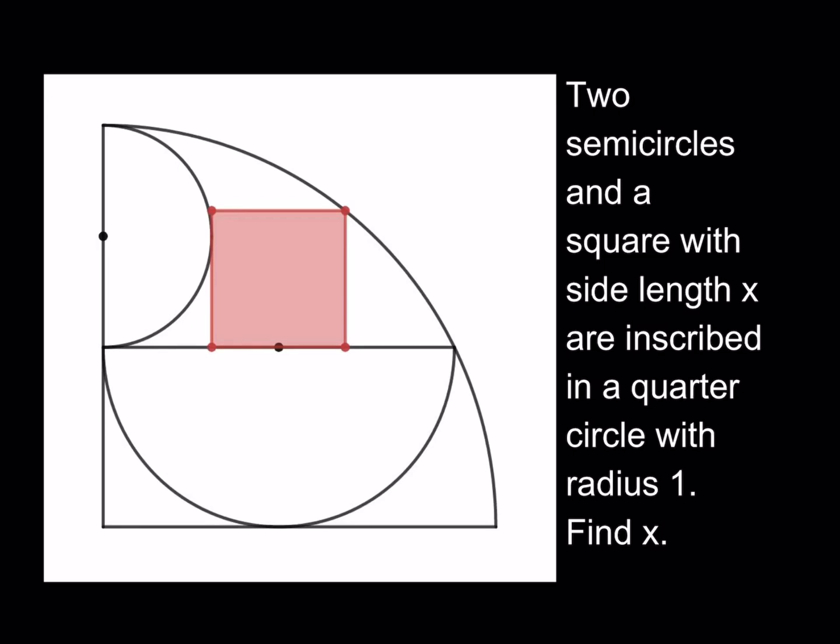Hello everyone, in this video we're going to be solving a geometry puzzle. Please don't forget to comment, like, and subscribe if you haven't subscribed to the channel yet. Hit the subscribe button and the notification so you'll be notified of new videos. Let's get started. Two semicircles and a square with side length x are inscribed in a quarter circle with radius 1, find x.